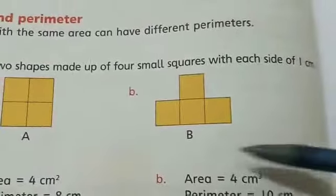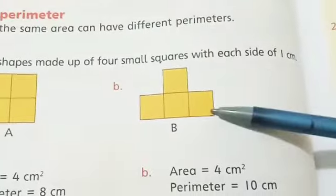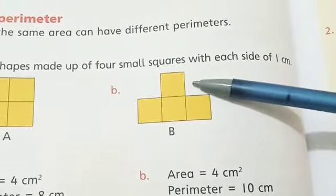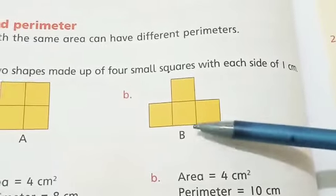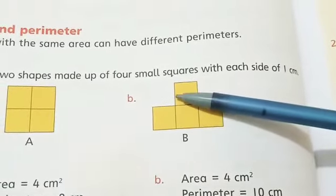Now let's calculate the perimeter of this shape B: 1, 2, 3, 4, 5, 6, 7, 8, 9, 10. So shape B has perimeter 10 cm.